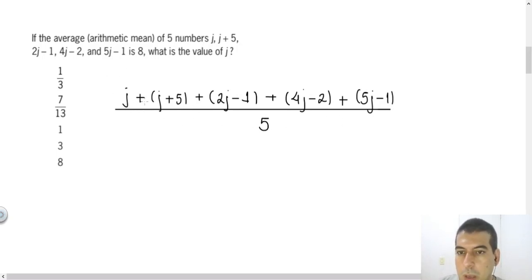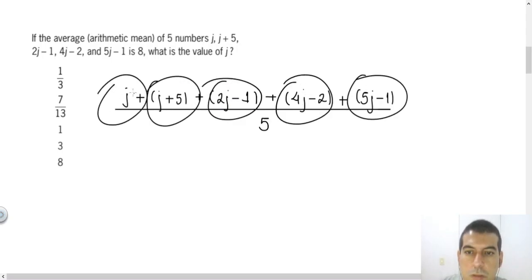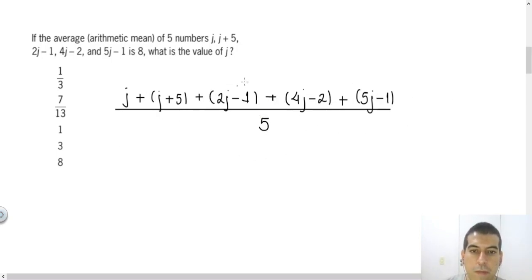Be careful, because you will consider, for example, j plus 5 as just one number. So you consider this combination as just one number. So this will be one number, this will be just one number, just one, just one, just one. So as you can see, you really have five numbers like the question told you before. So we have this fraction equals 8, because the question told that the result of the arithmetic mean will be 8.